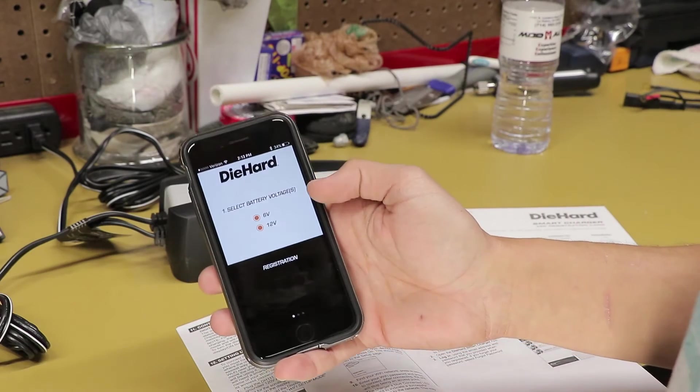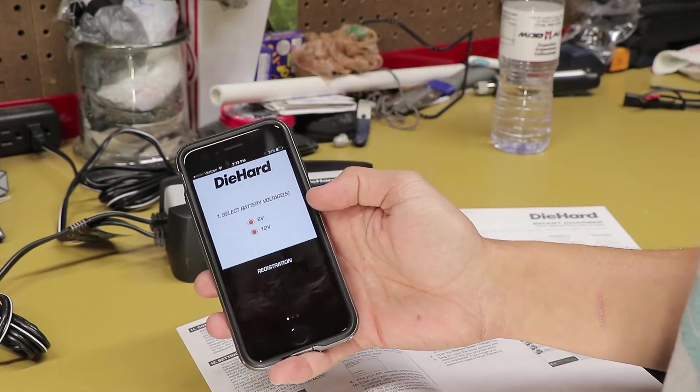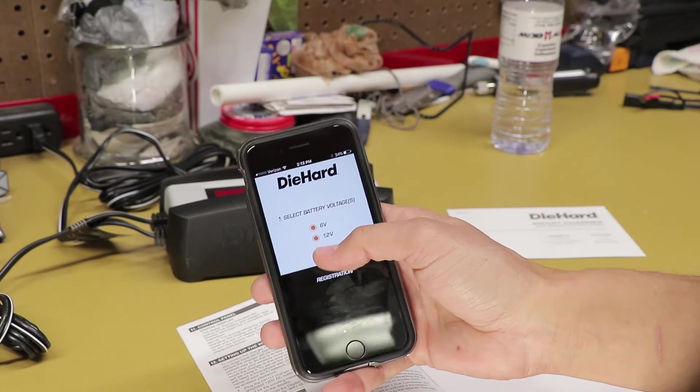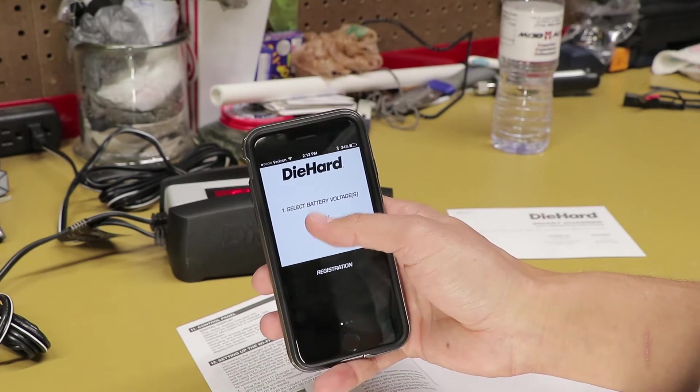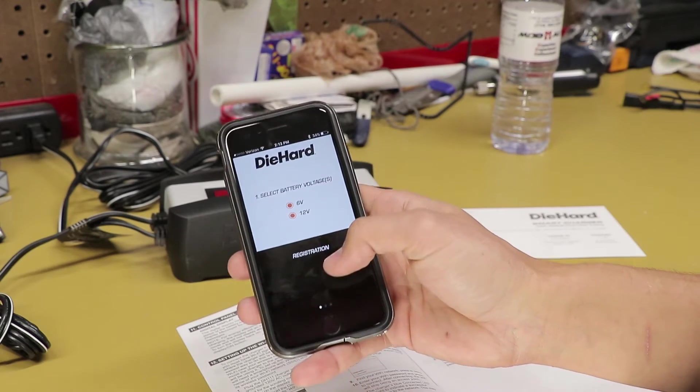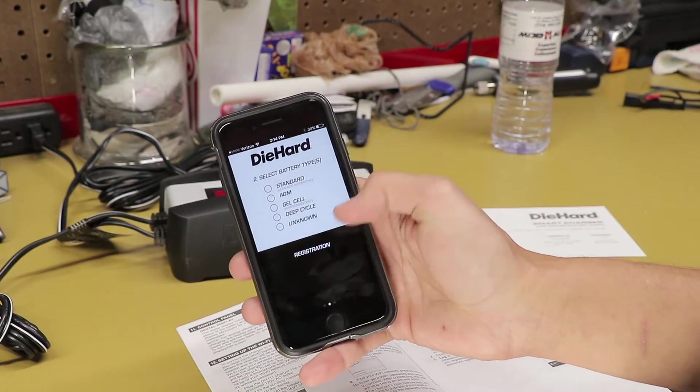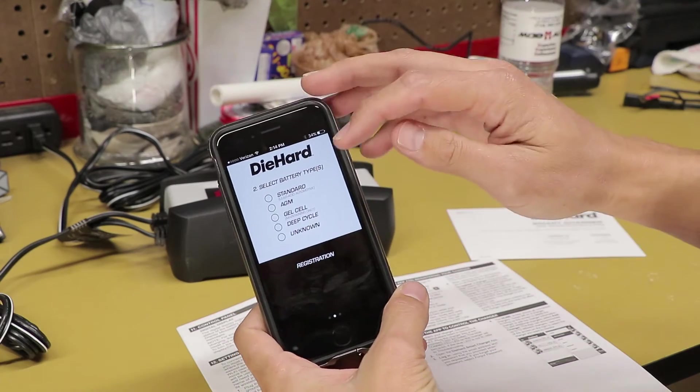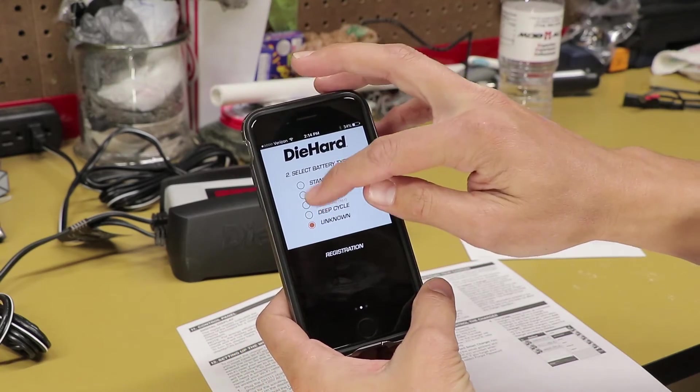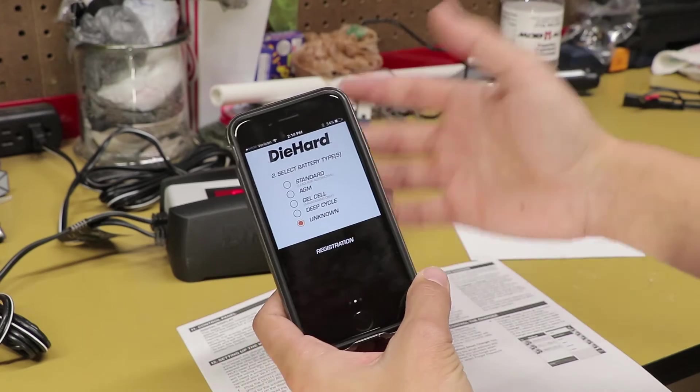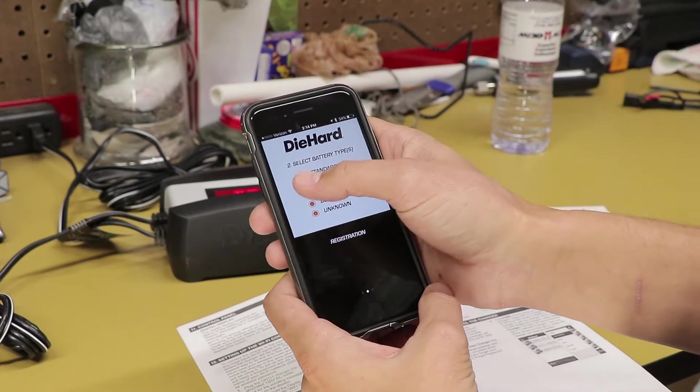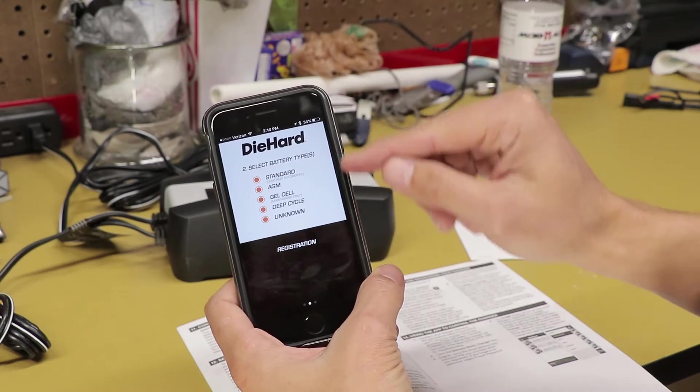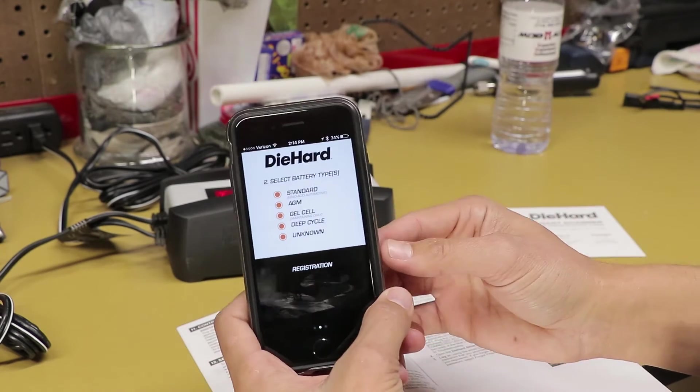So after you add the charger, it's going to ask you to select the battery voltages. Now I will be occasionally using this for both 6 volts and 12 volts. So if you just hit the little buttons there, they light up orange. Swipe over. Battery types, same thing. I use this for a variety of stuff. So I'm going to just go ahead and select all of them.